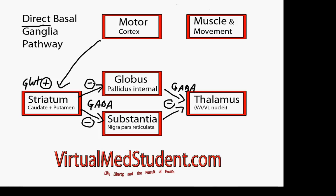So ultimately, when you stimulate the striatum from the motor cortex, you get an inhibitory effect on the globus pallidus internus and substantia nigra. This leads to a disinhibition of the thalamus, because the inhibitory message is no longer getting through — the striatum is inhibiting the globus pallidus and substantia nigra.